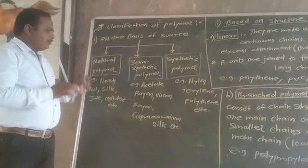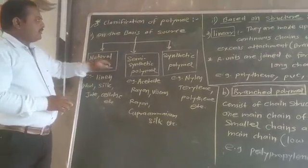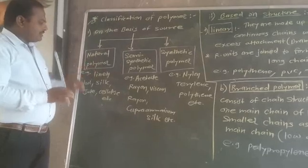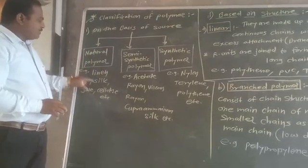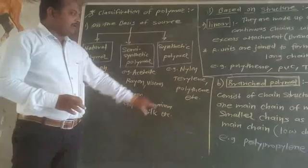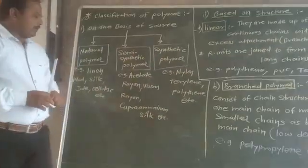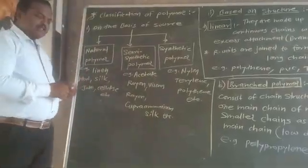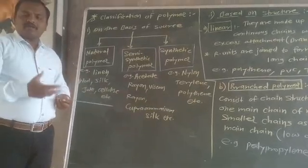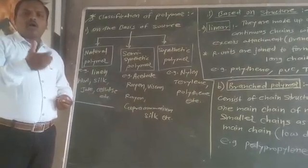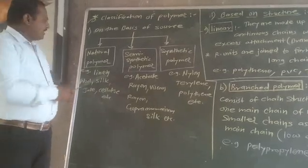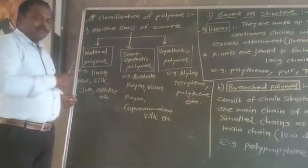The important point from this classification is that we must remember the examples of natural polymer, semi-synthetic polymer, and synthetic polymer. What is the meaning of natural polymer? The polymers which are obtained either from plants or animals directly are considered as natural polymers.